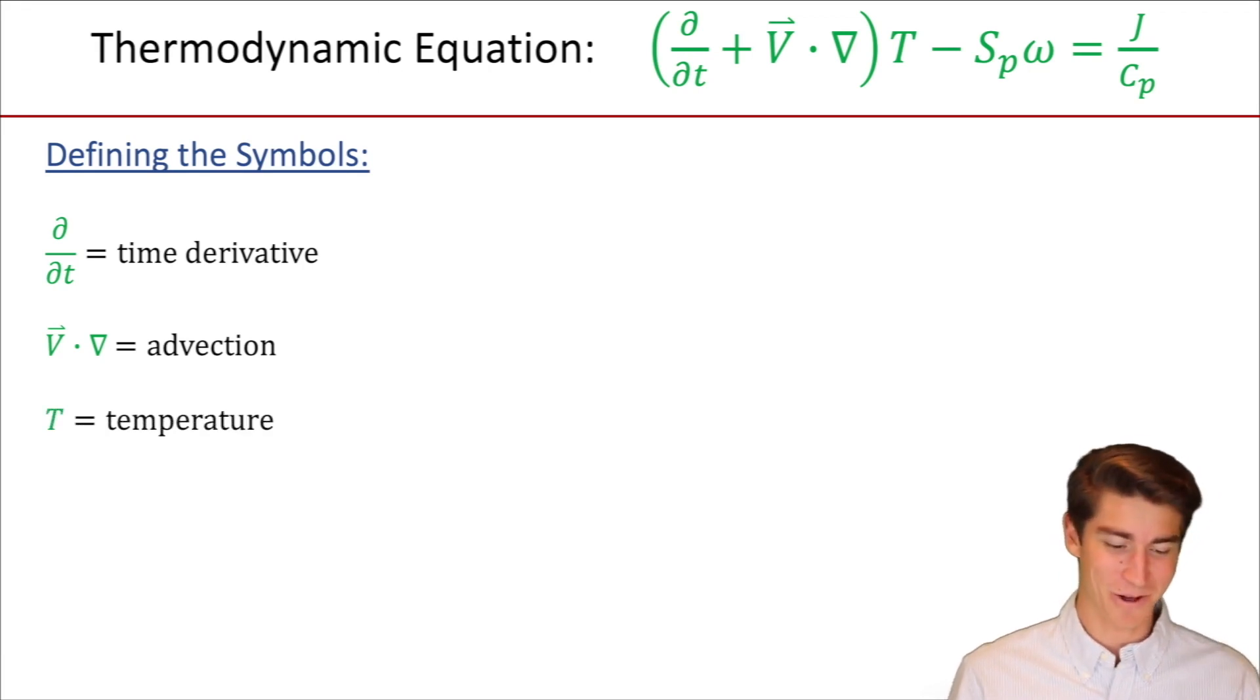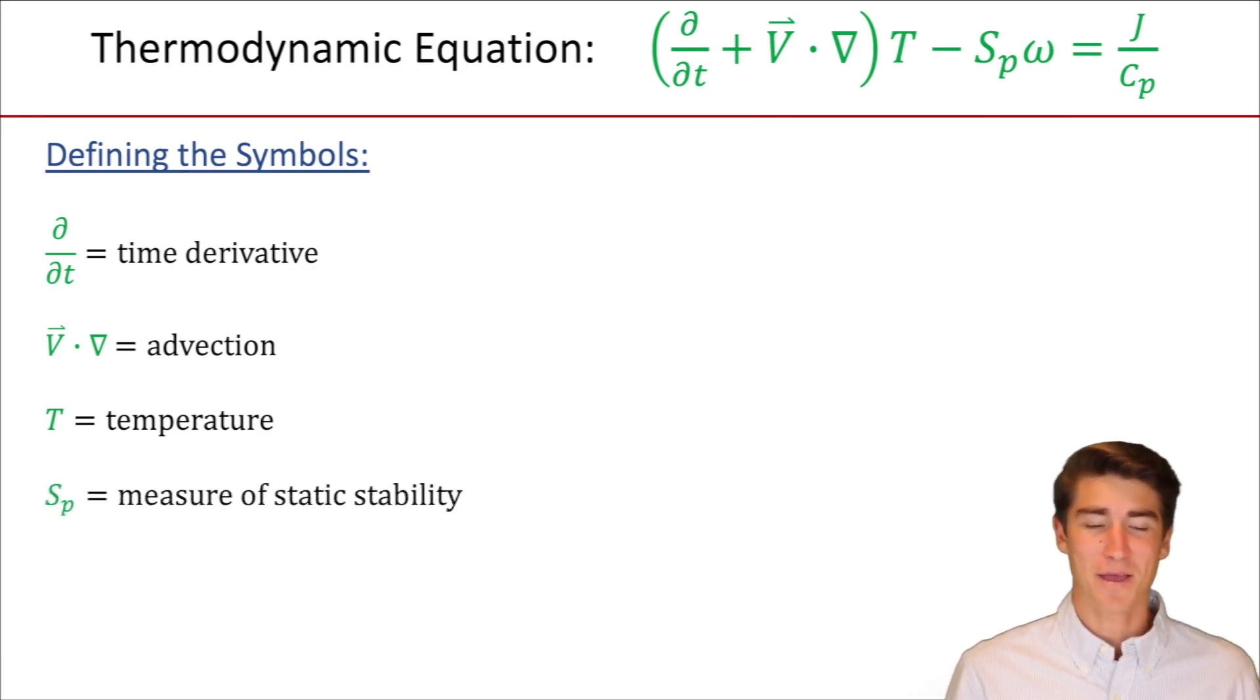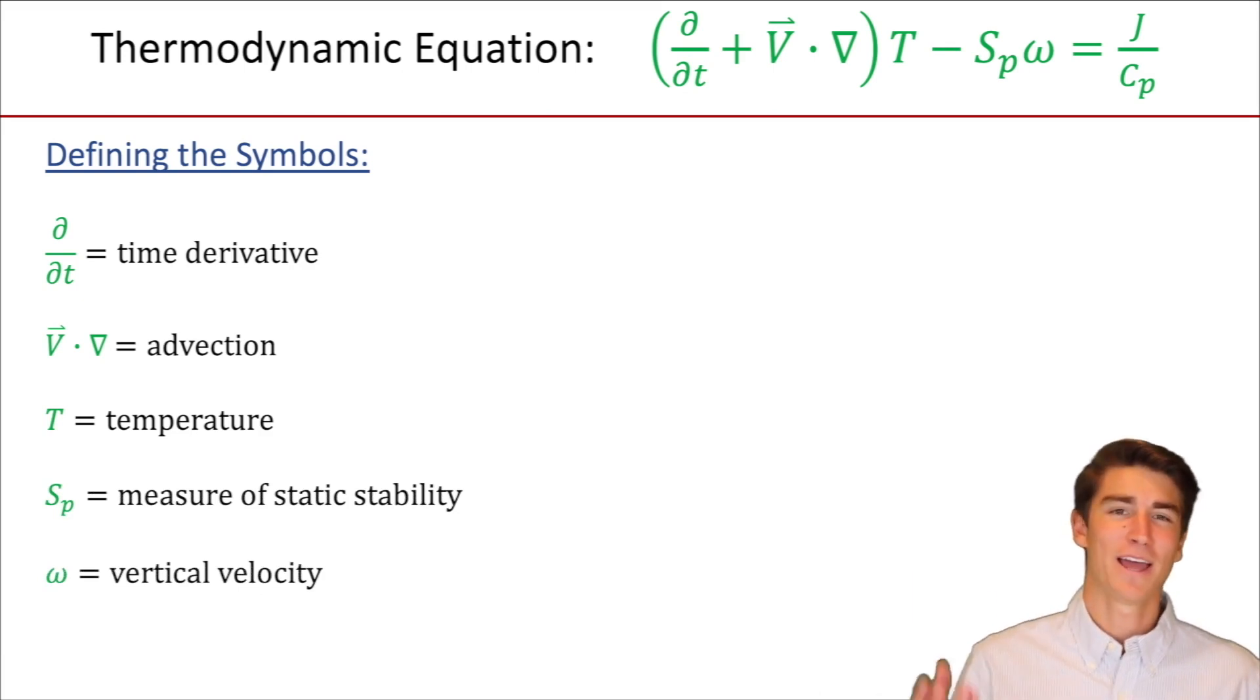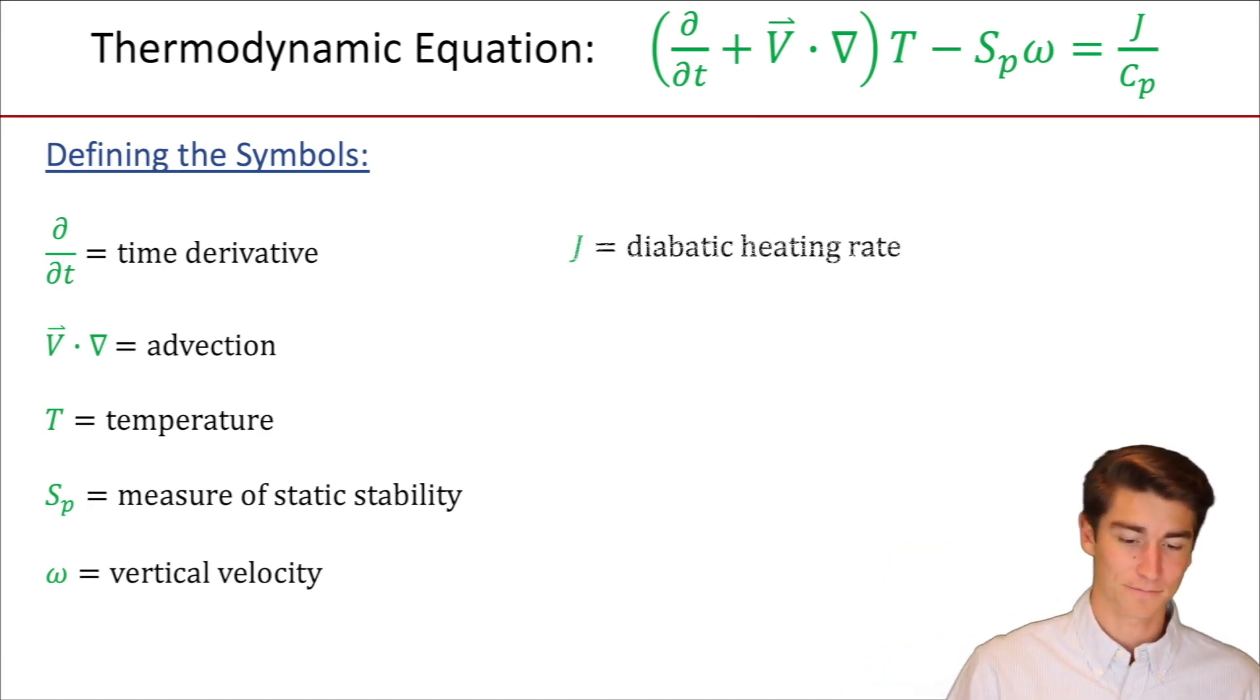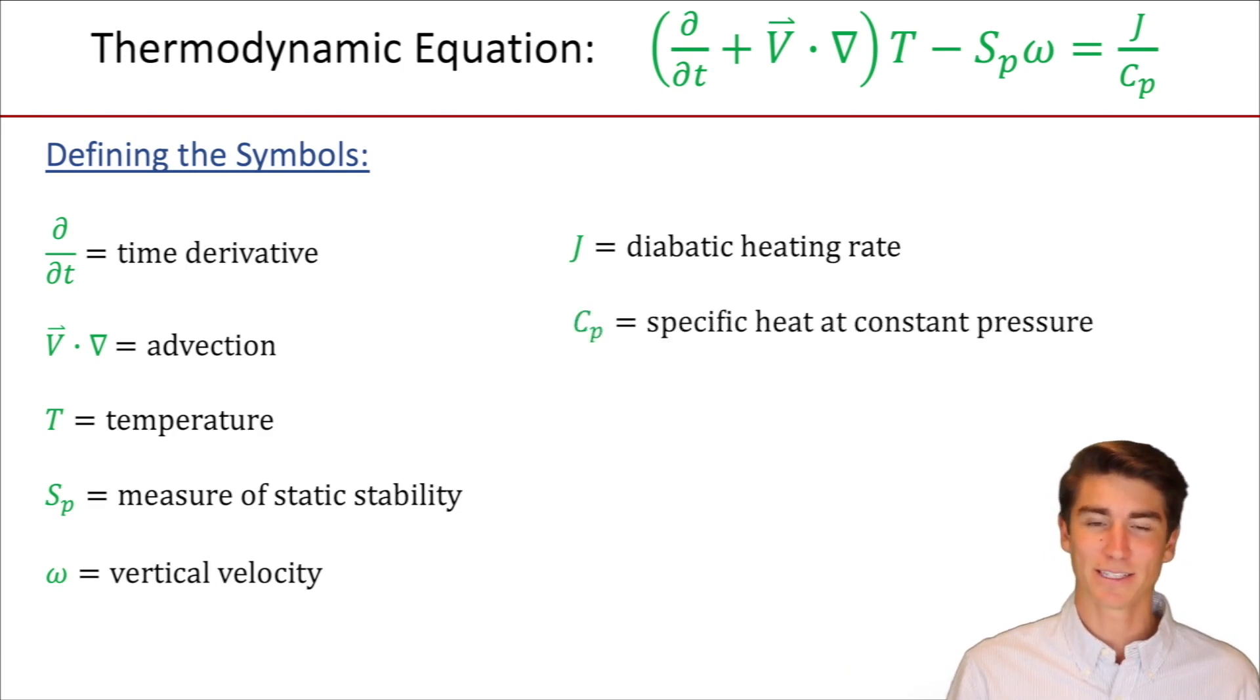T, that's an easy one. We'll redeem ourselves with a nice confidence booster. That one's temperature. You probably know that one. Sp, measure of static stability. Omega is vertical velocity, so how fast wind or air is moving in either going up or down. J is the diabatic heating rate.